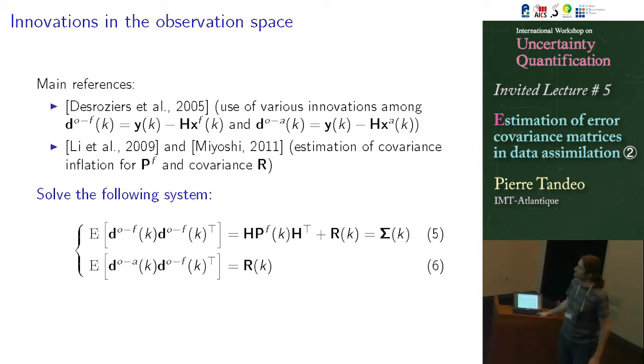So in practice, it's not so easy to get the good to estimate directly the Q. So people are trying to estimate what we call the inflation behind this P_F. So we want to artificially increase the spread of P_F. And that's what is used in these two methods to try to estimate the inflation factor for P_F and also for R. So this is a very famous approach and largely used in data assimilation.